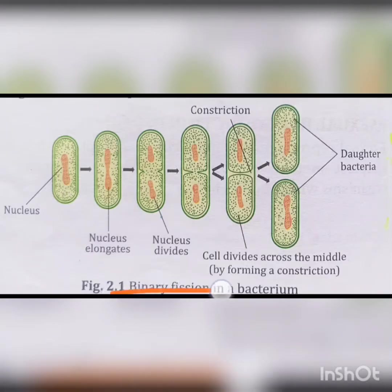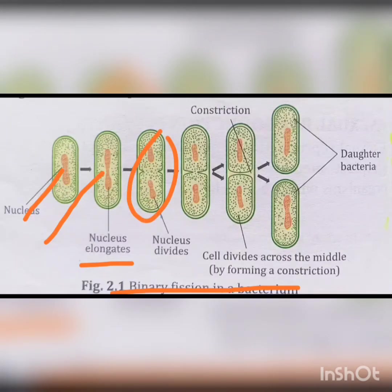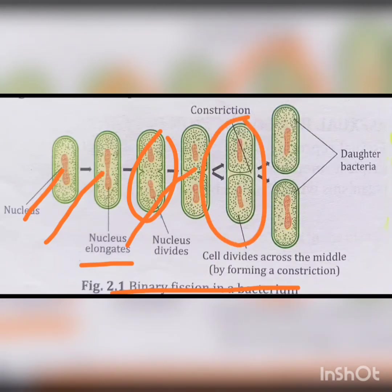In binary fission in bacteria, the nucleus starts dividing first and a constriction is produced between the nucleus; it elongates and divides into two parts. Along with the nucleus, the constriction starts among the cytoplasm also, and slowly the cell divides across the middle by forming the constriction. The two daughter cells are then produced.